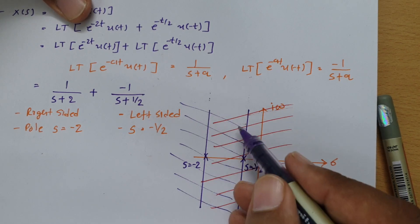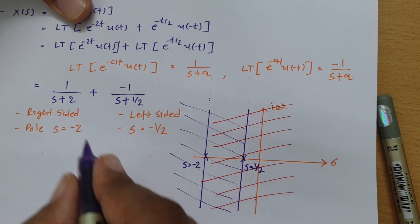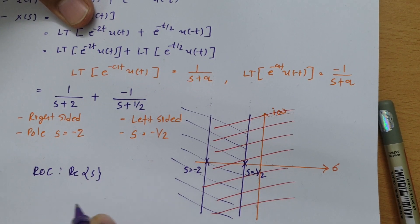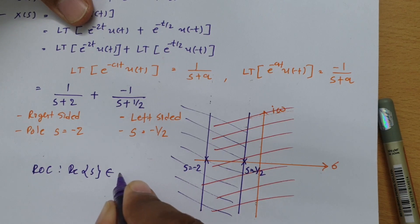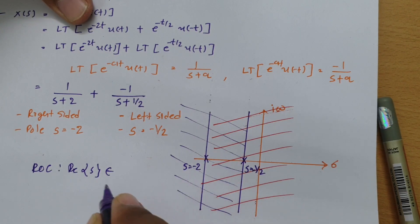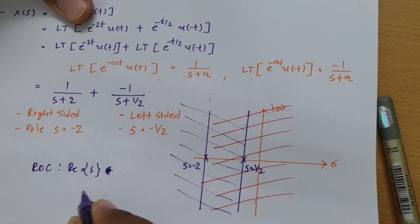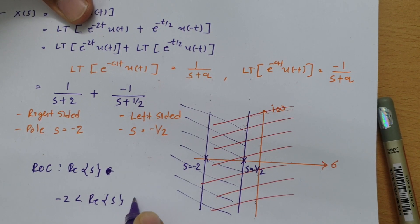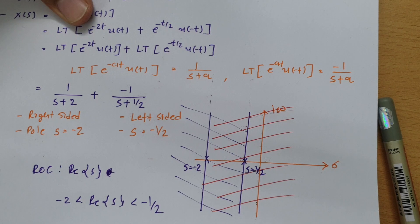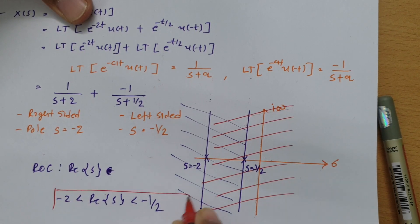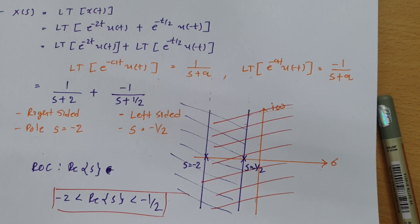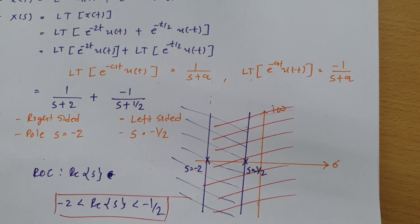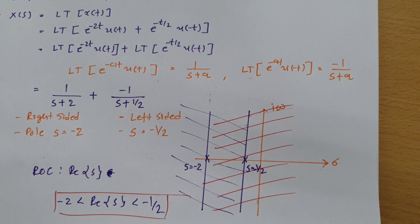The common ROC is the strip between s = -2 and s = -1/2, giving: -2 < Re(s) < -1/2. This is the ROC for this problem. I hope you have understood this session — please give your valuable suggestions.